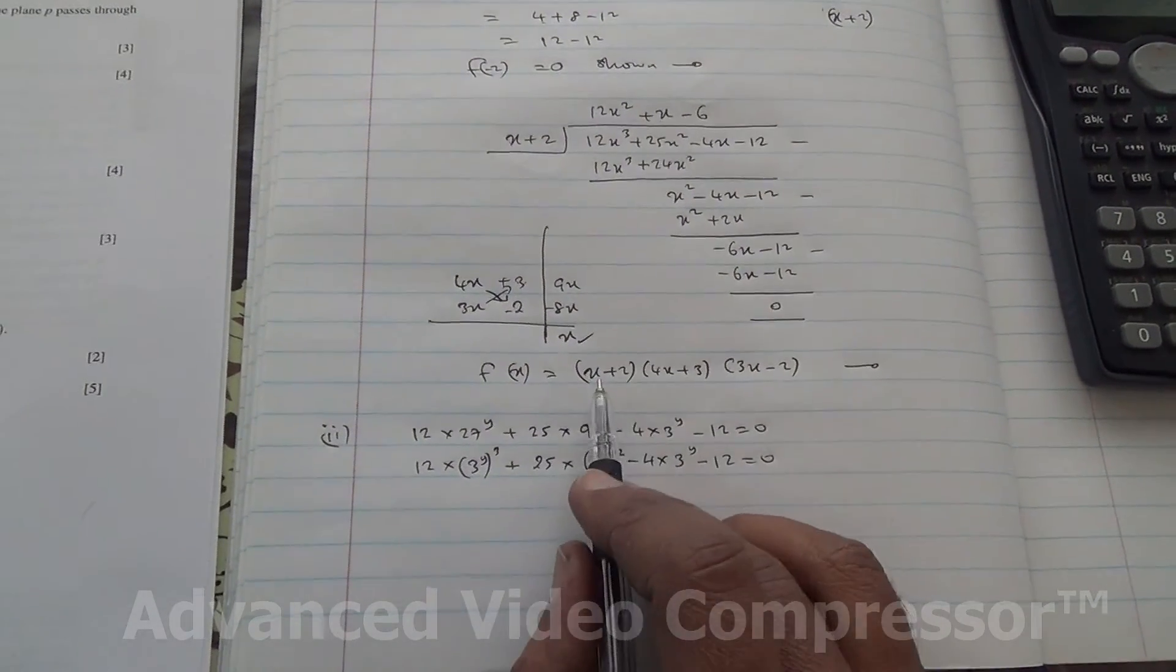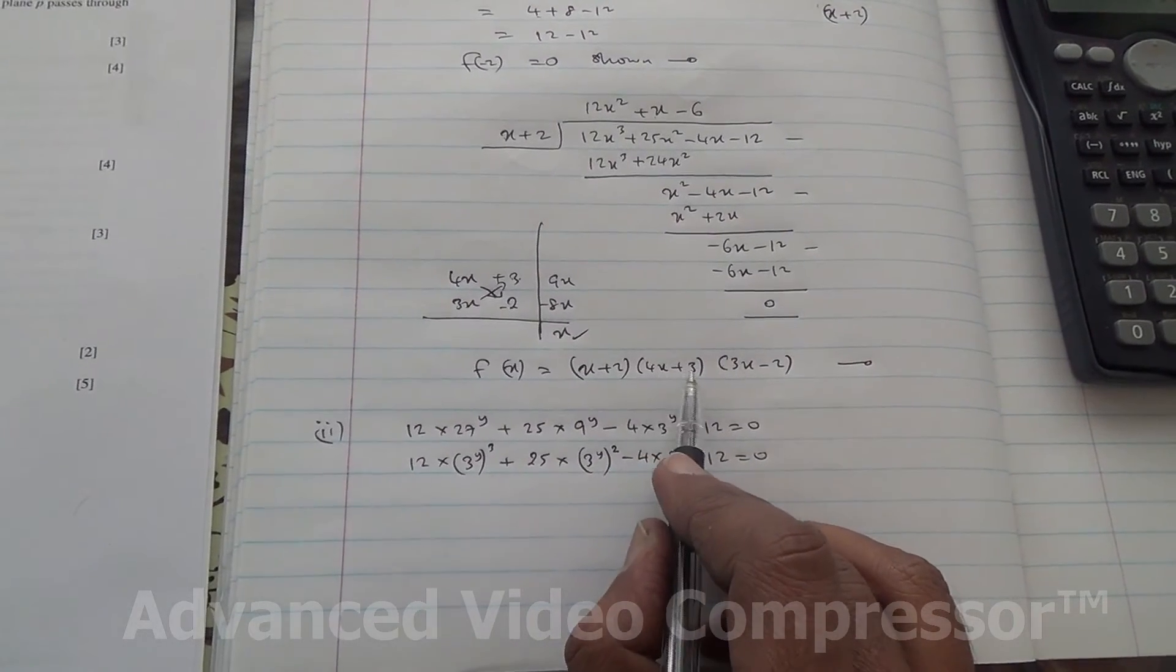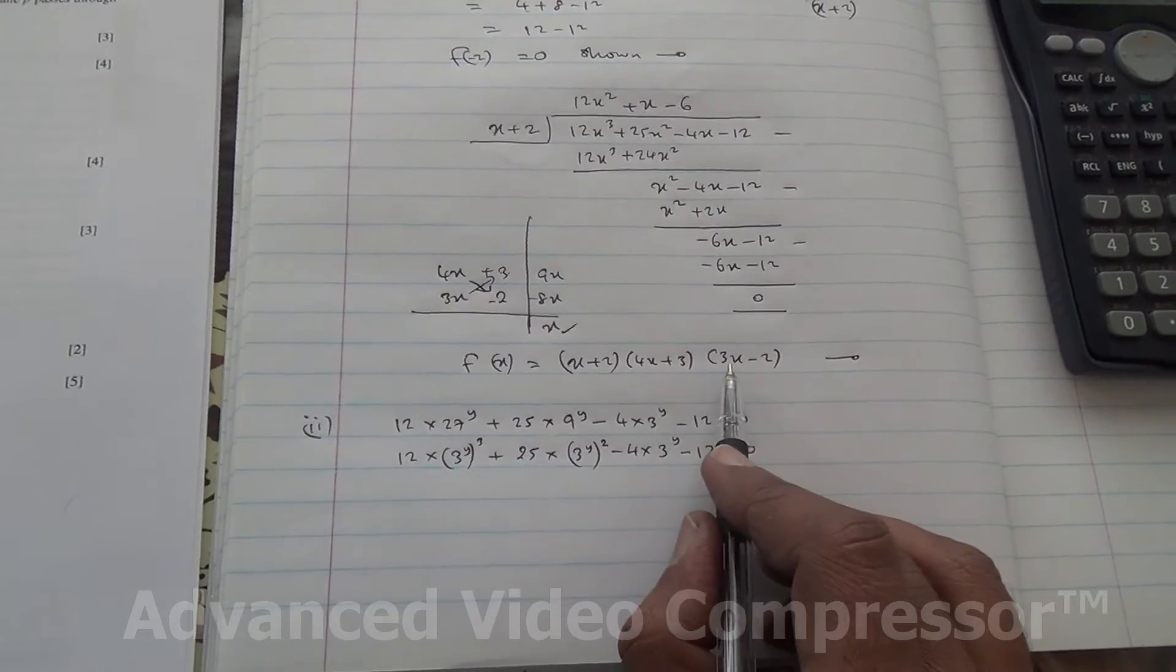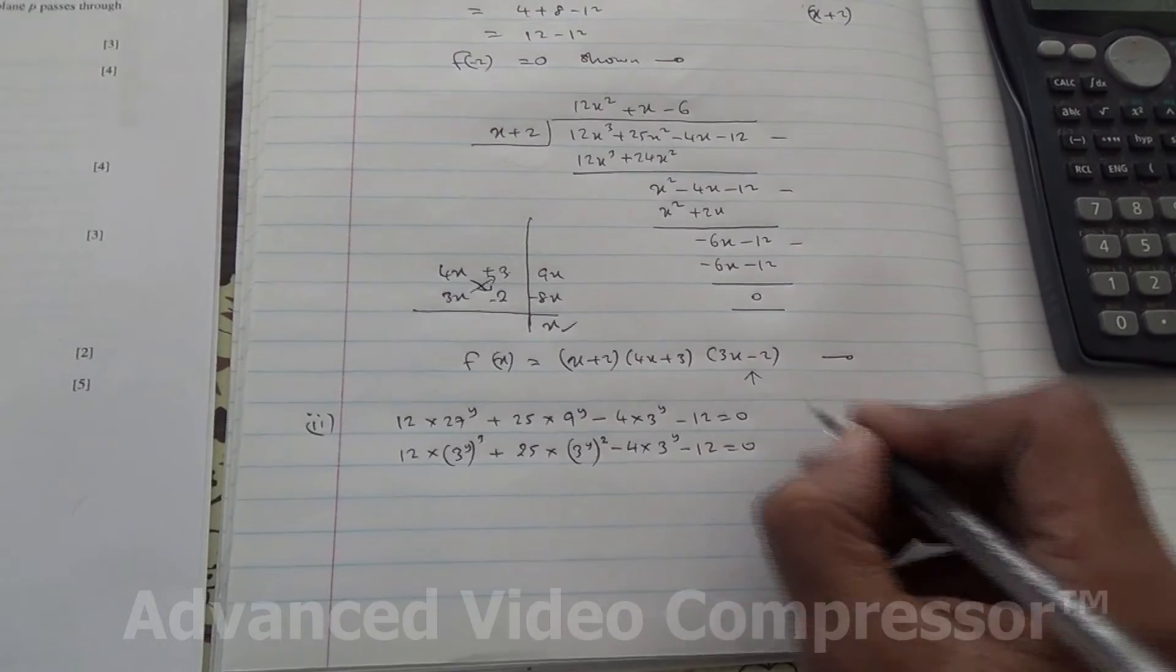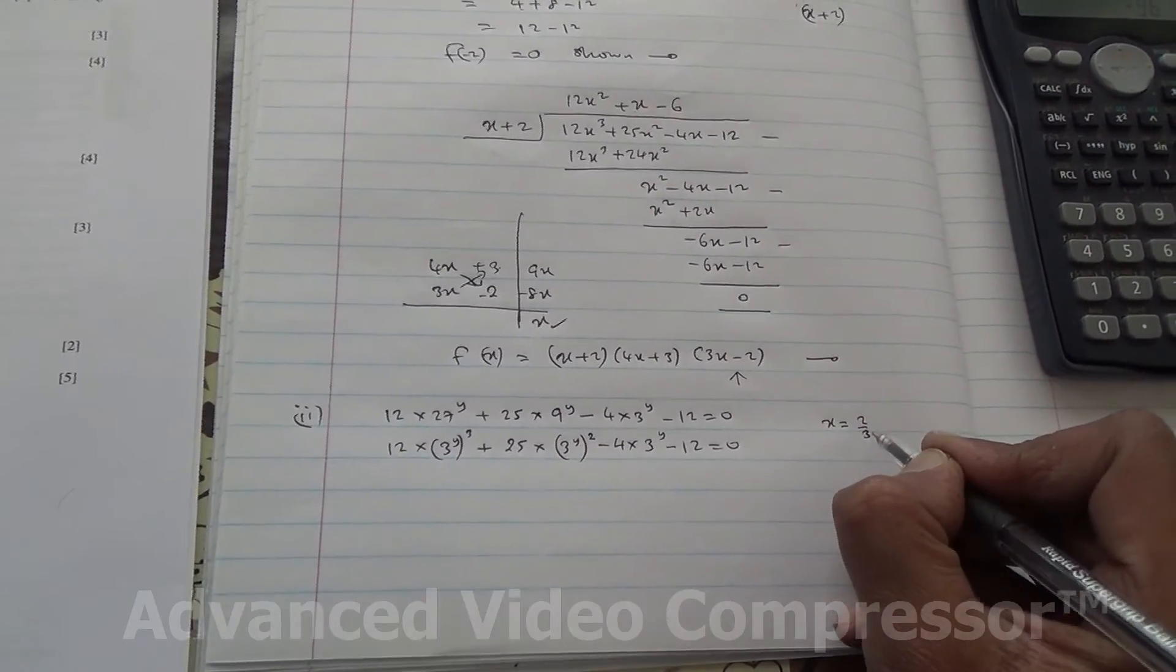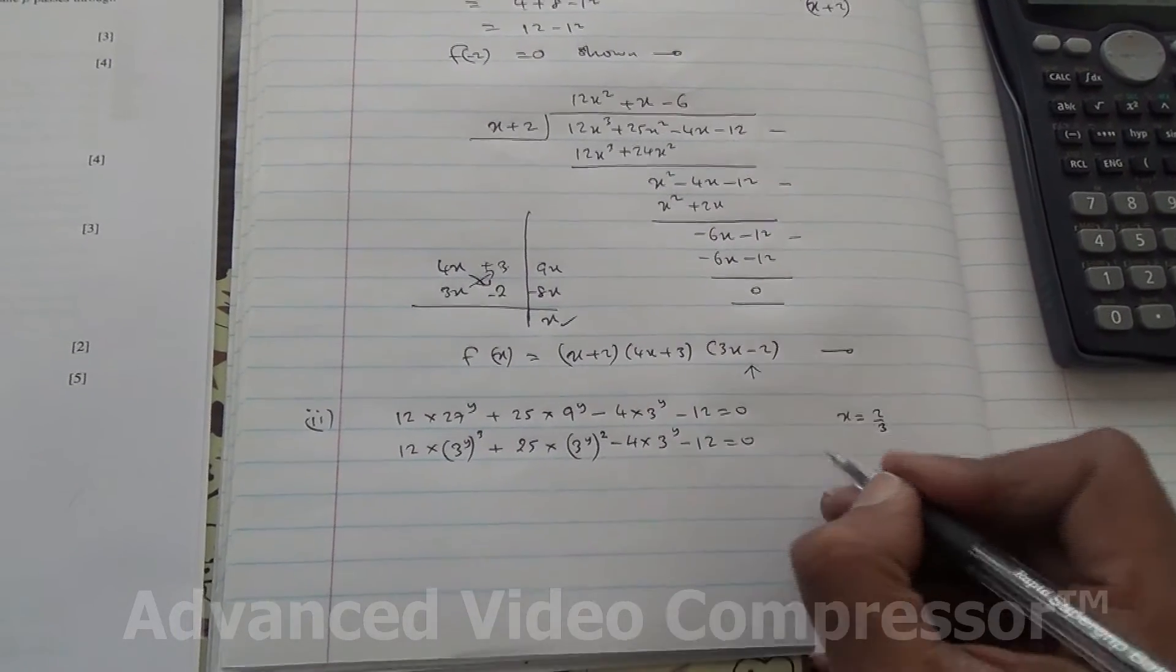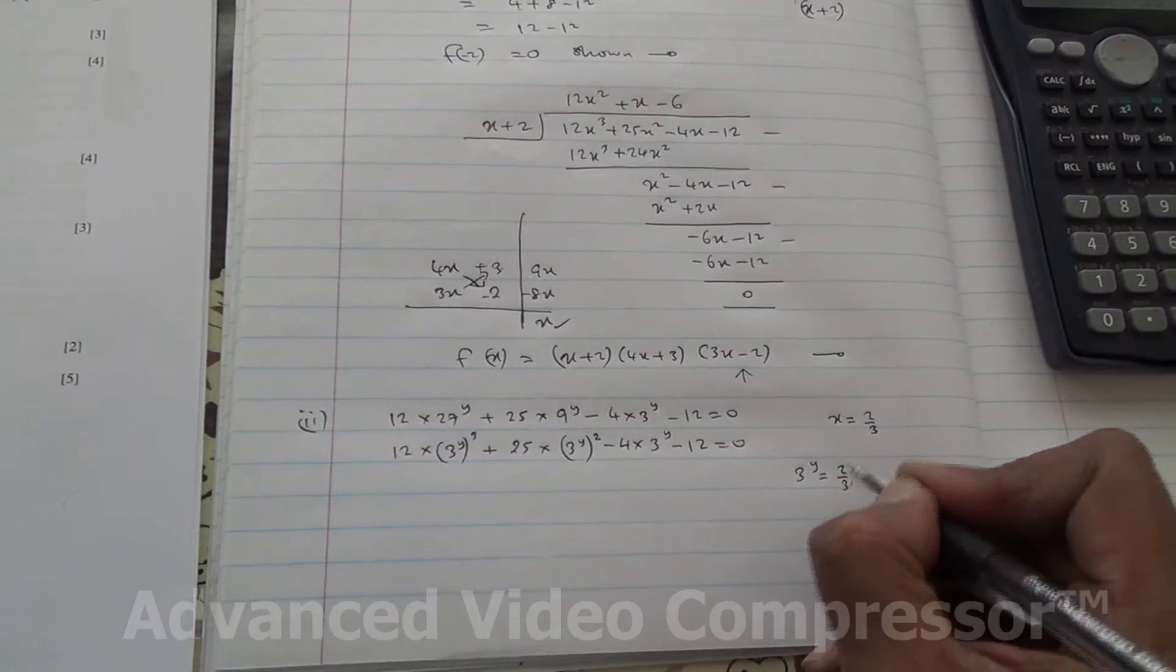So, we have three values. x is equal to -2, x is equal to -3/4, and here x is equal to 2/3, so this one seems to be the most appropriate. Therefore, we got x is equal to 2/3, meaning that 3 to the power of y is equal to 2/3. That's a positive value. This is what I was talking about.